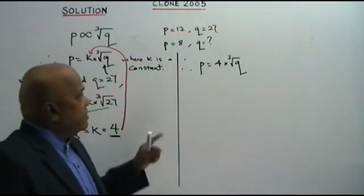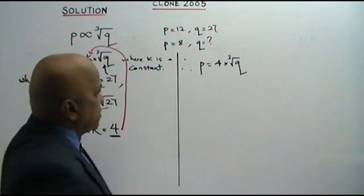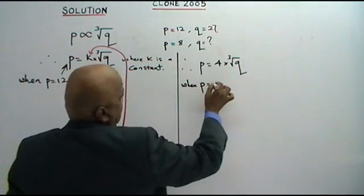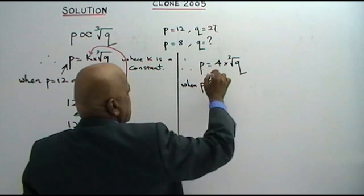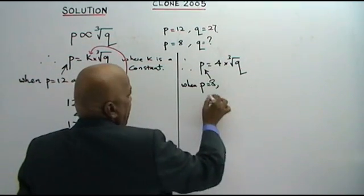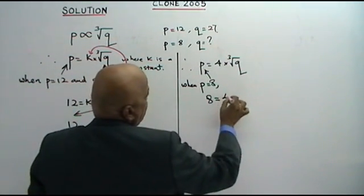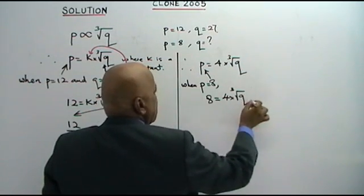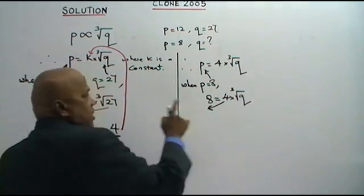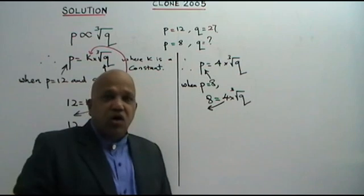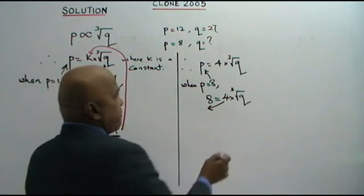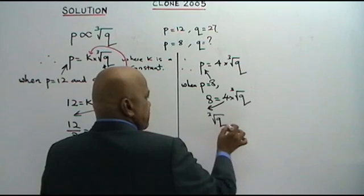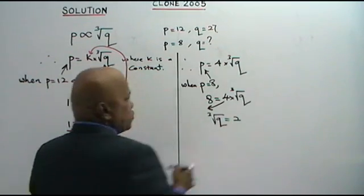Now, when P is equal to 8, substitute here: 8 is equal to 4 times the cube root of Q. So 8 over 4 gives us 2, meaning the cube root of Q equals 2.